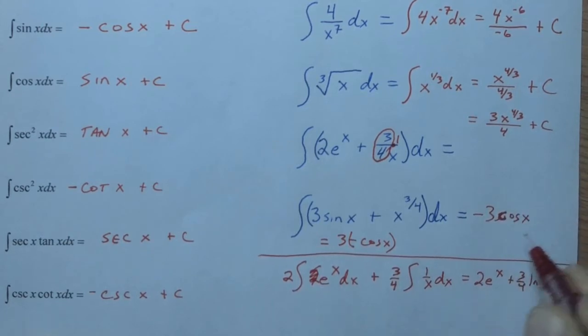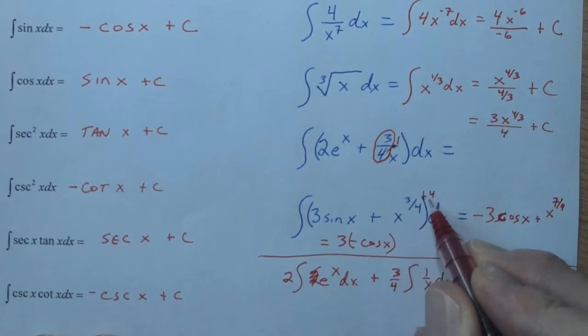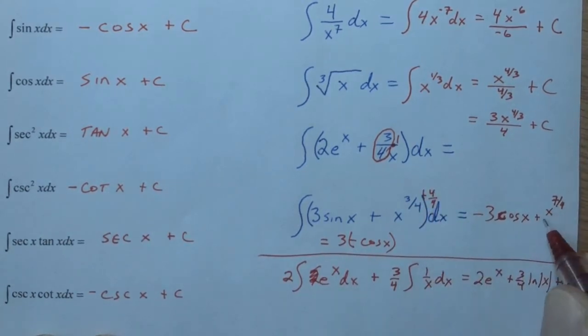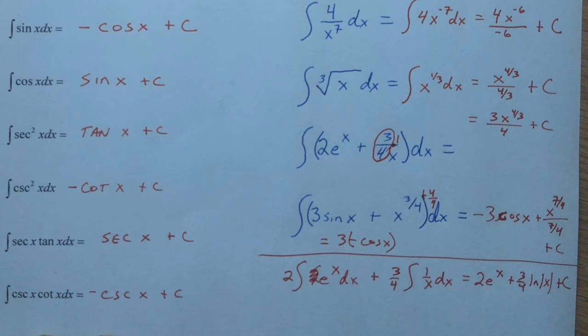And then here, x to the 3 fourths, so that's going to become x to the 7 fourths, because 3 fourths plus 4 fourths is 7 fourths, divided by 7 fourths, and then, yes, we still need our plus c. So, there's a few more examples to get you going when we're doing the anti-derivative. What we're going to look at next is how do we figure out what the value of c is.